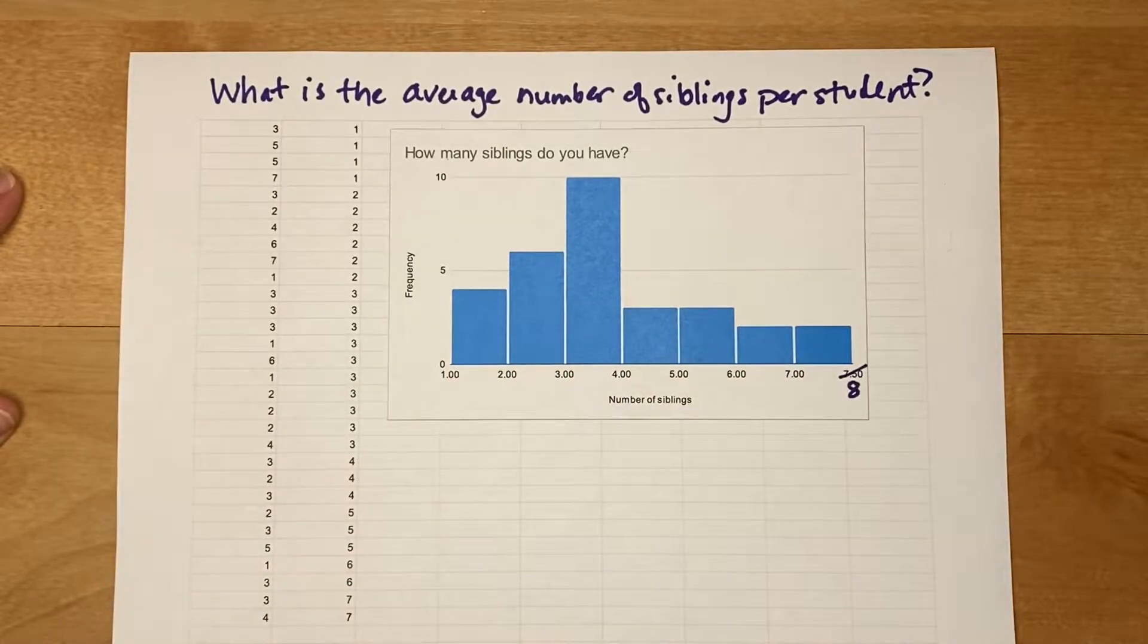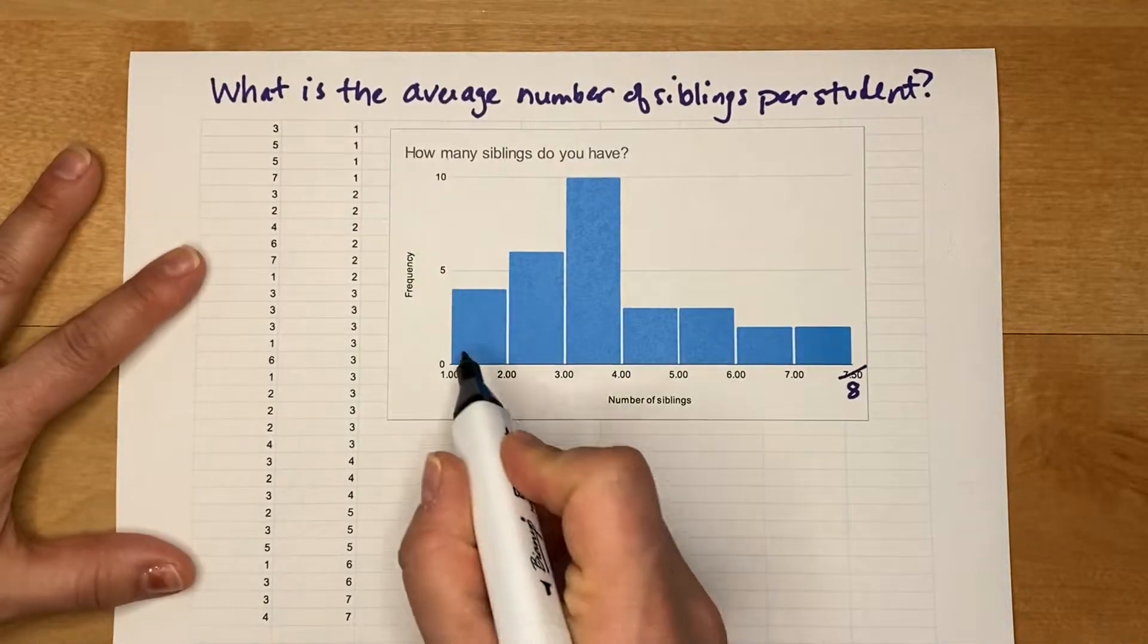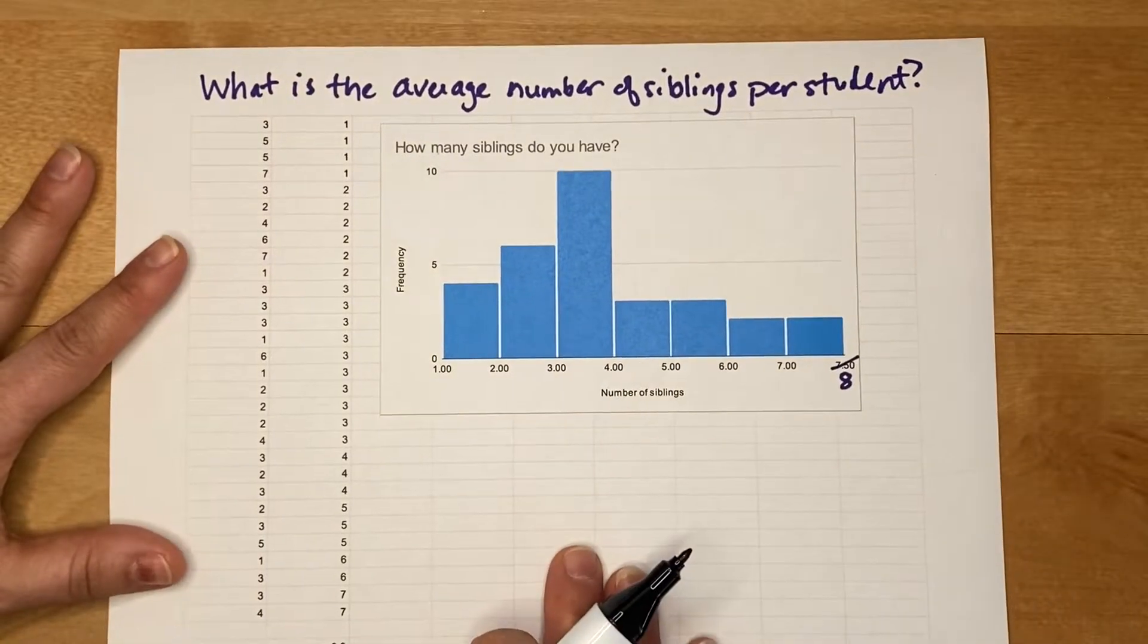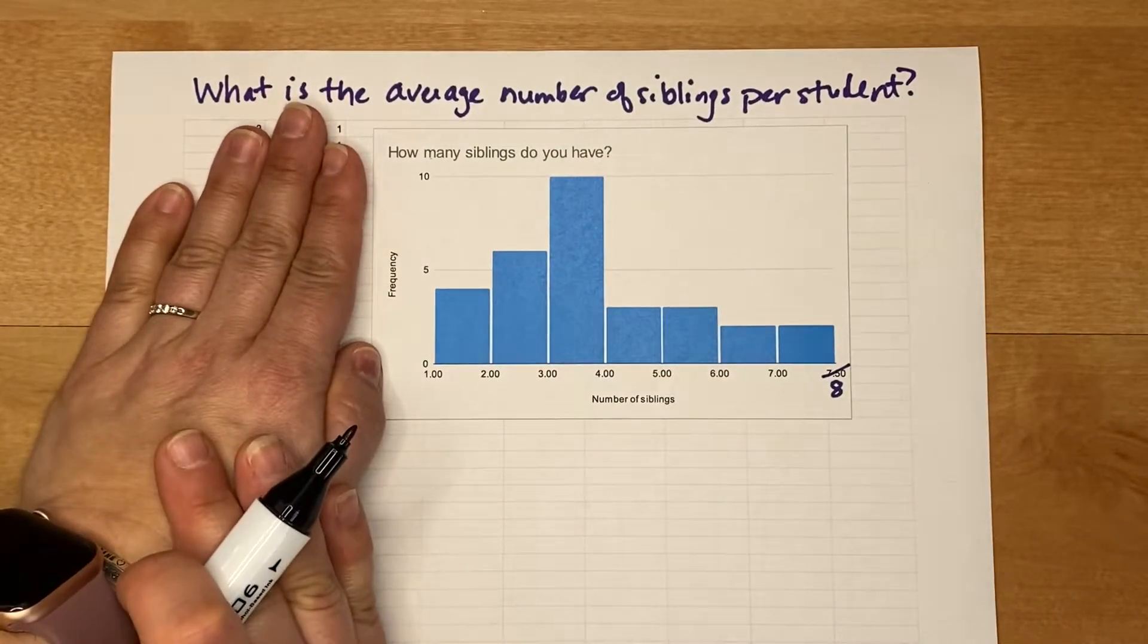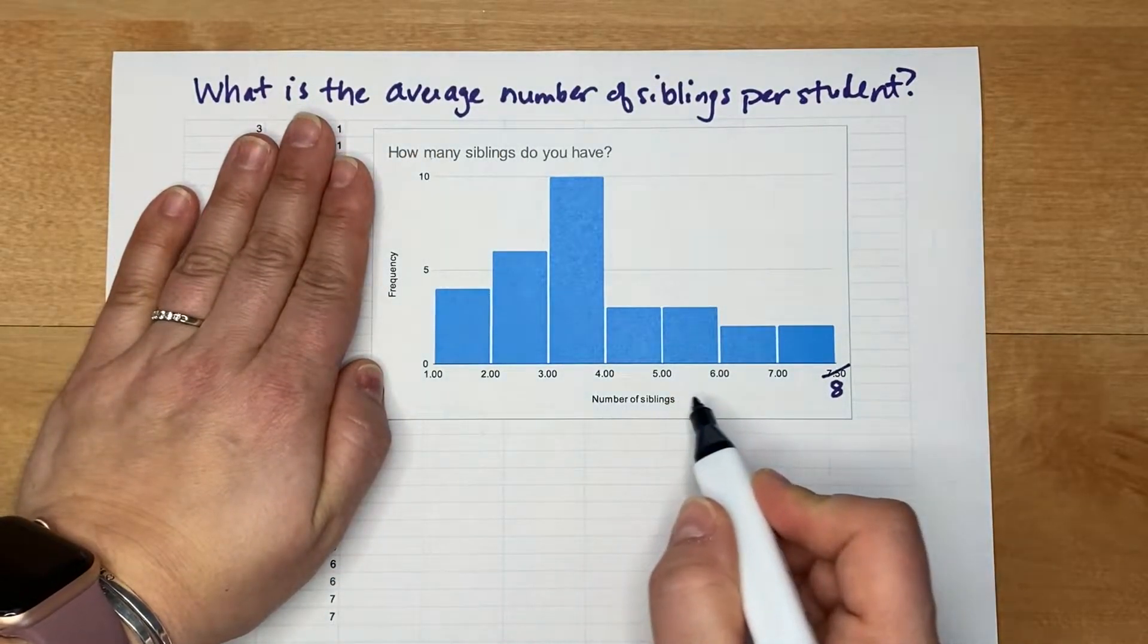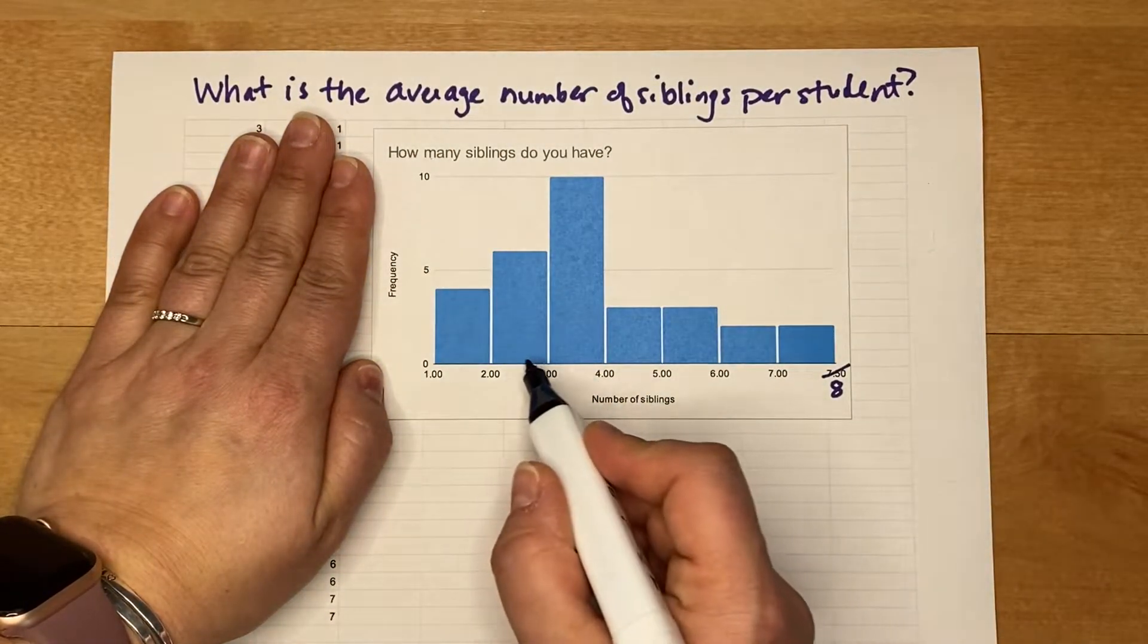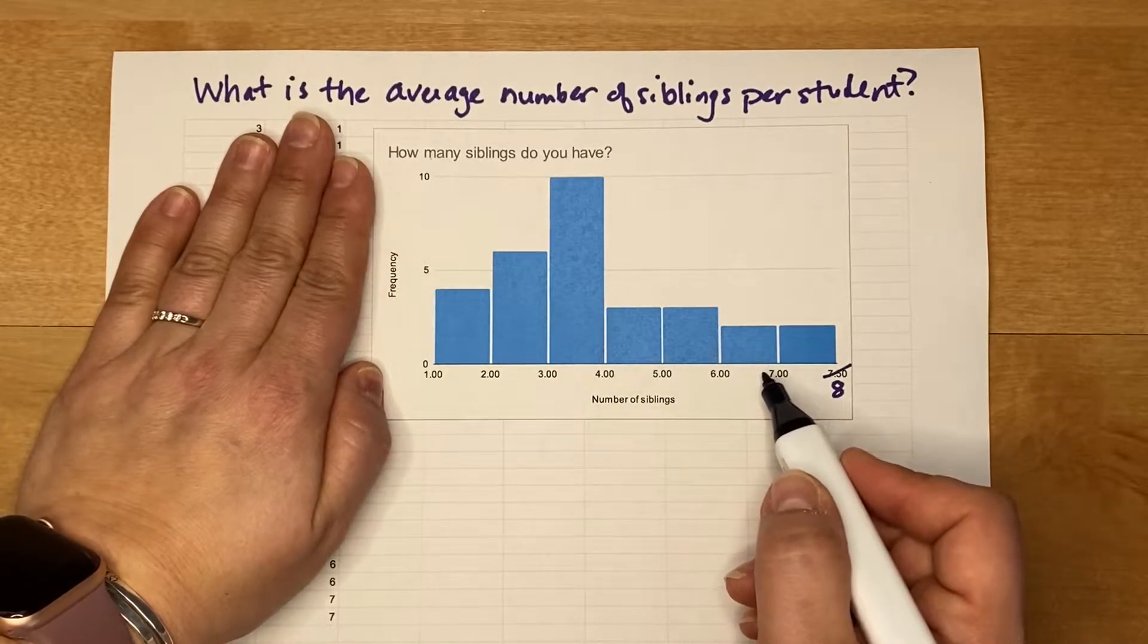Hey everyone, I thought I'd make a video on how to compute the average when all you're given is a graph of data. A common question that you might see in the homework is like this data right here. The question might say what's the average number of siblings per student, and if you only have this graph.